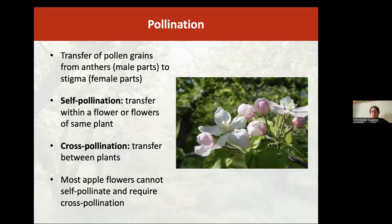Pollination is the transfer of pollen grains that are part of the female parts on the anthers to the stigma of the female parts. We can have what we call self-pollination, where the transfer happens within the same flower or flowers on the same plant. Cross-pollination happens between plants. It's really important when we think about apple flowers, because they cannot self-pollinate and they require cross-pollination.